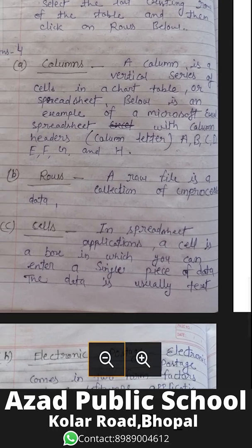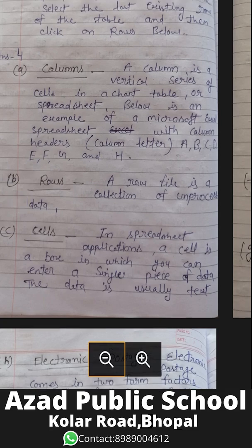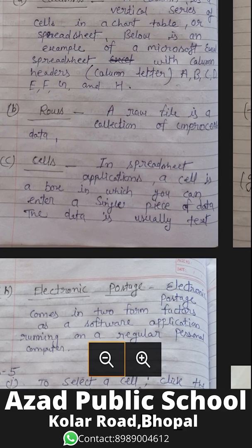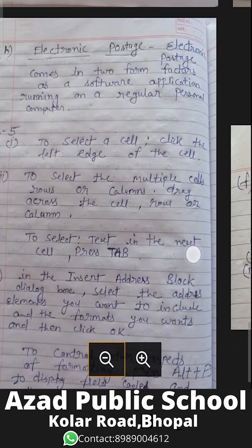The fourth question: what do you understand by the following terms? A column is a vertical series of cells — columns are vertical in a chart, table, or spreadsheet, with column headers like A, B, C, D, E, F, G, H. A row is a collection of data. In a spreadsheet application, a cell is a box in which you can enter a single piece of data, usually in text format.